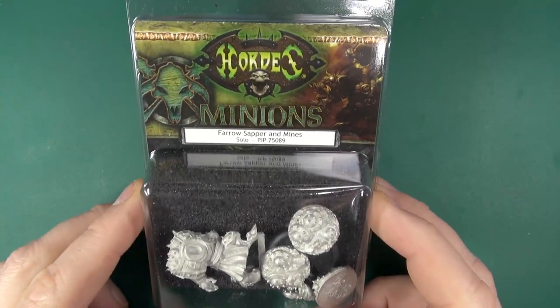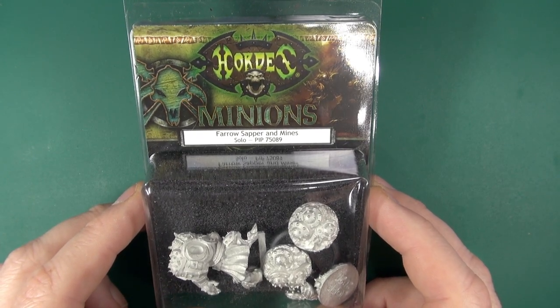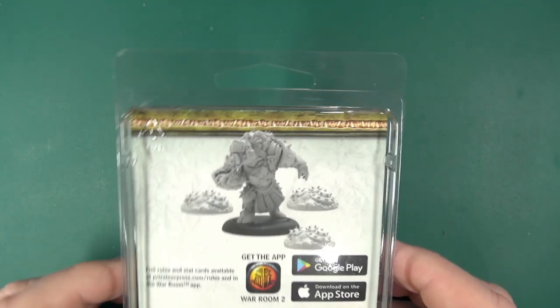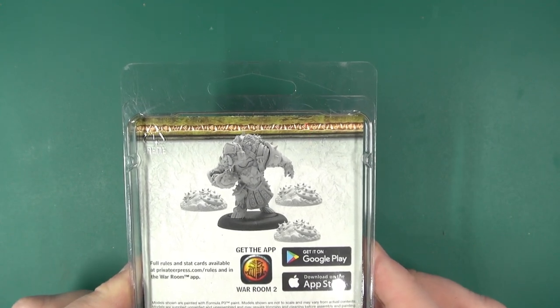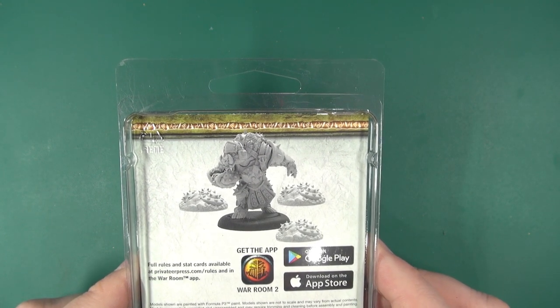I'm looking at the minion Farrow Sapper with mines for Hordes by Privateer Press. As you can see, it's a single miniature and three additional mine tokens.